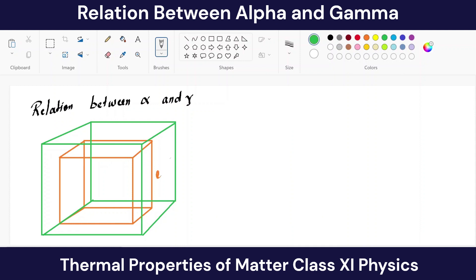The orange cube has each side L, so the initial volume V equals L cubed — equation number one. Because we heated this cube, the volume expands, and the new volume is (L + ΔL)³, where ΔL is the change in length. To expand this we use the identity (a + b)³ = a³ + b³ + 3a²b + 3ab².